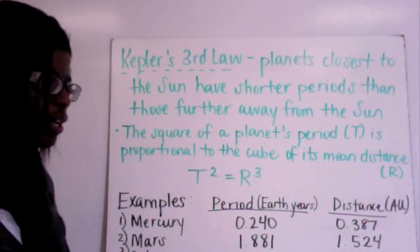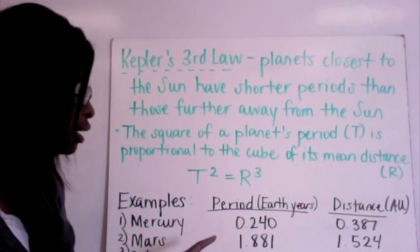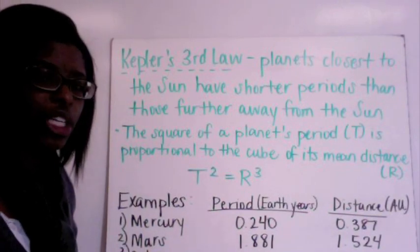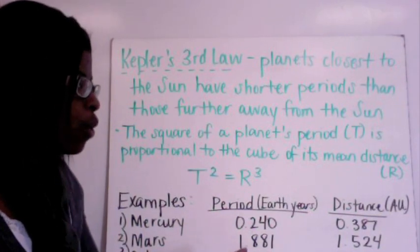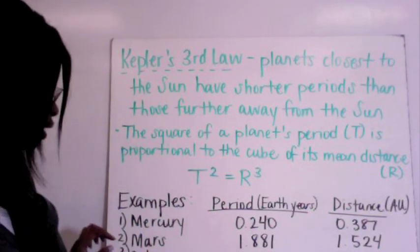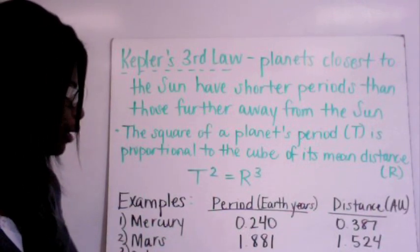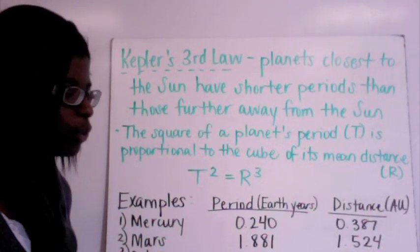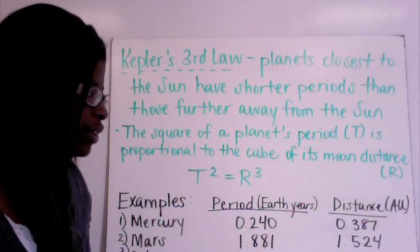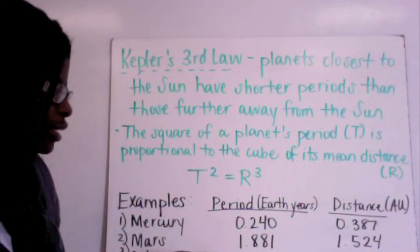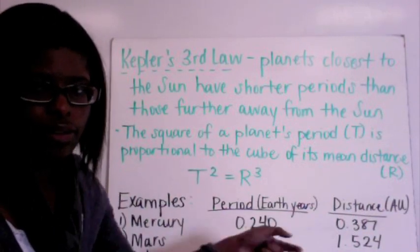Then Mars has a period of 1.881 which has a distance from the Sun of 1.524. And then Saturn has a period of 29.46 which is a distance from the Sun of 9.539. So here you notice that our periods are increasing as the distance from the Sun increases.